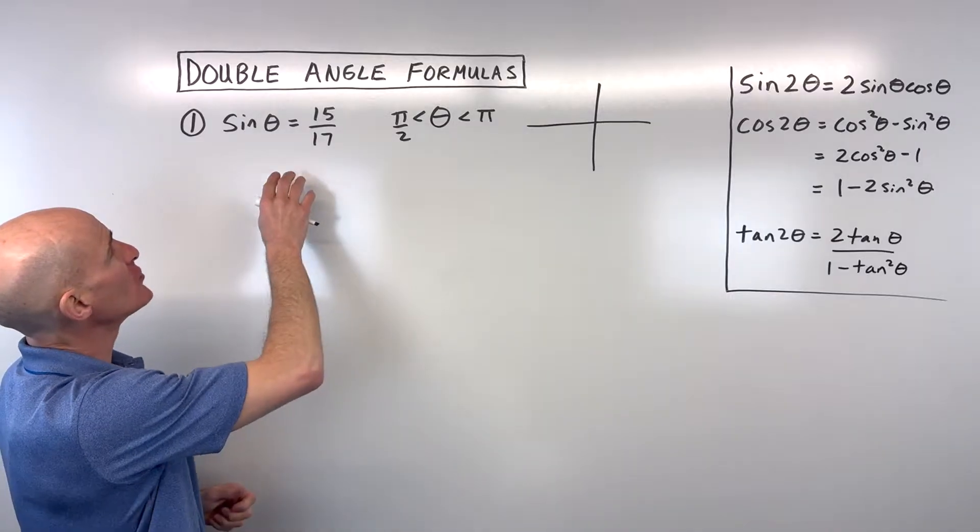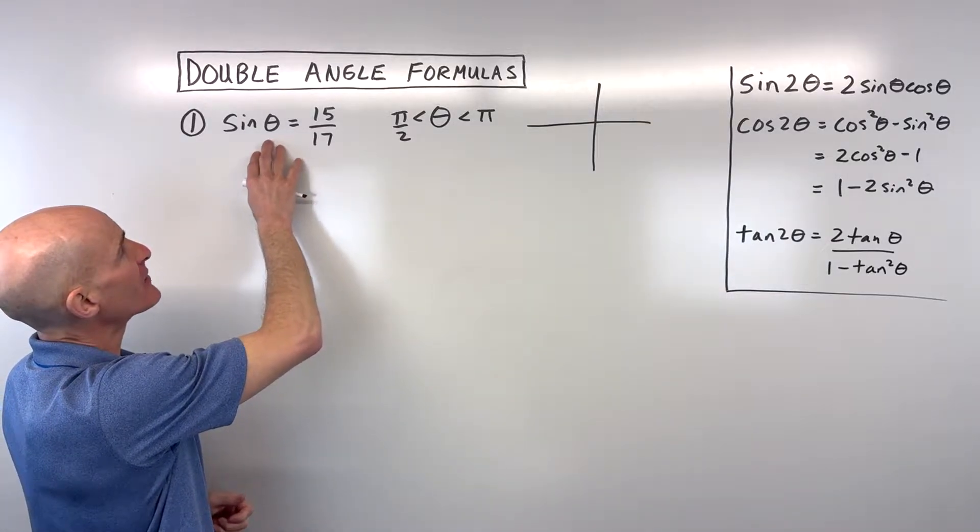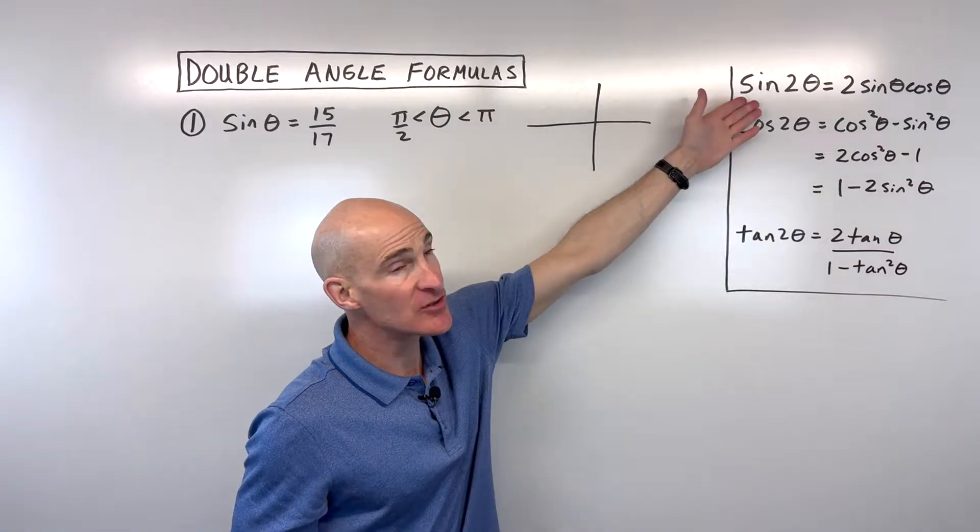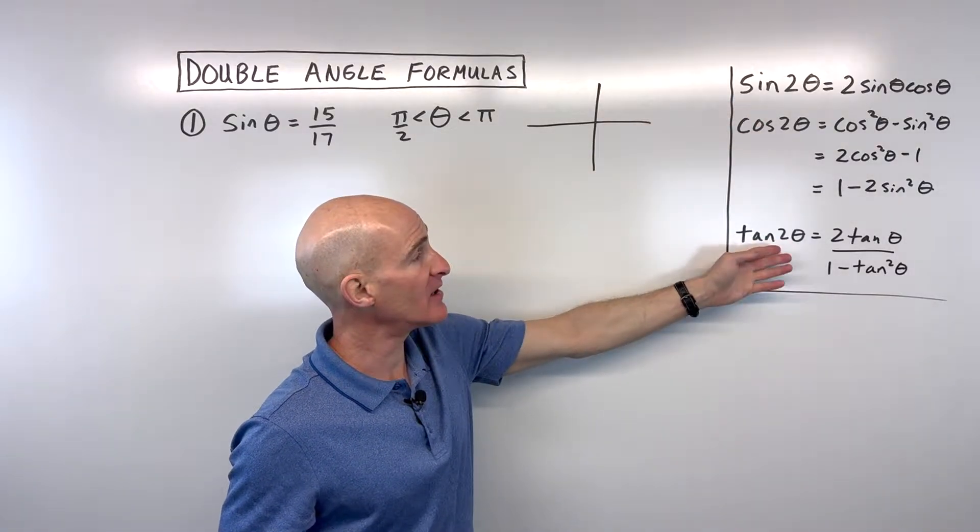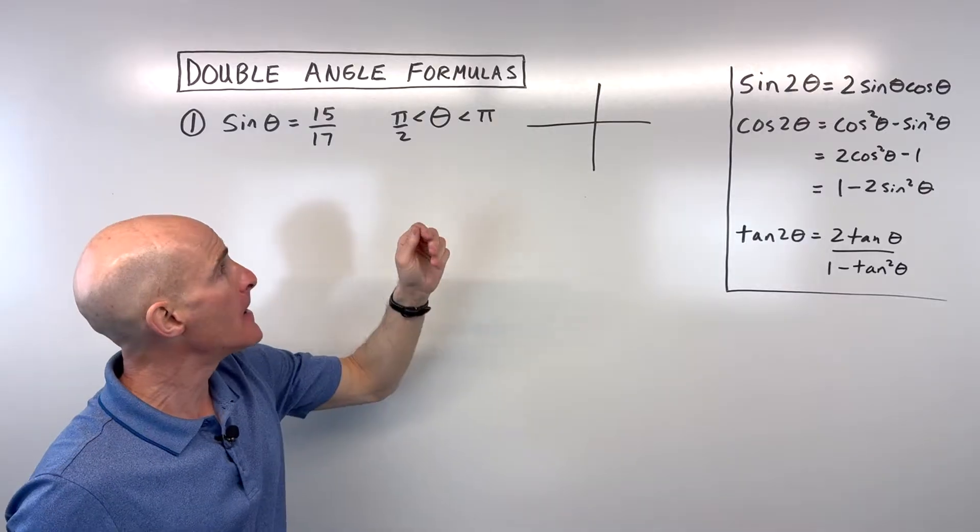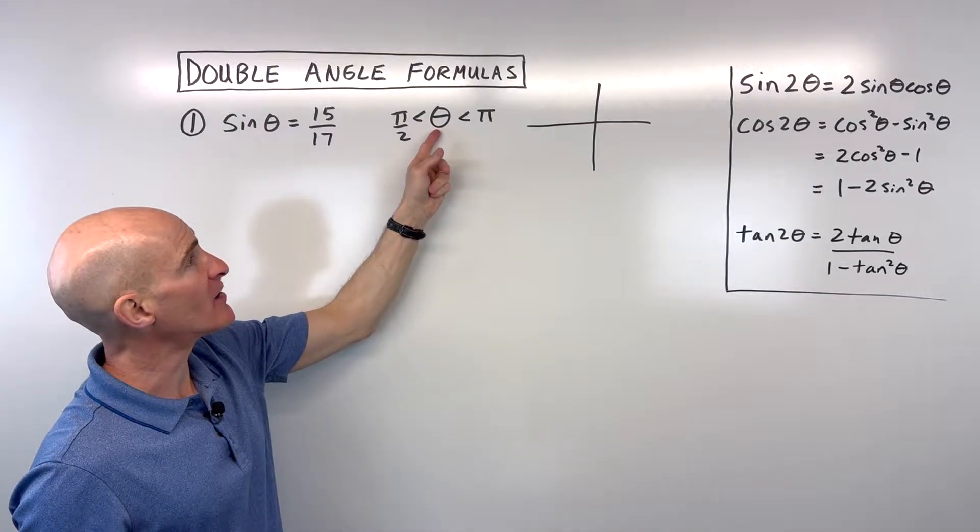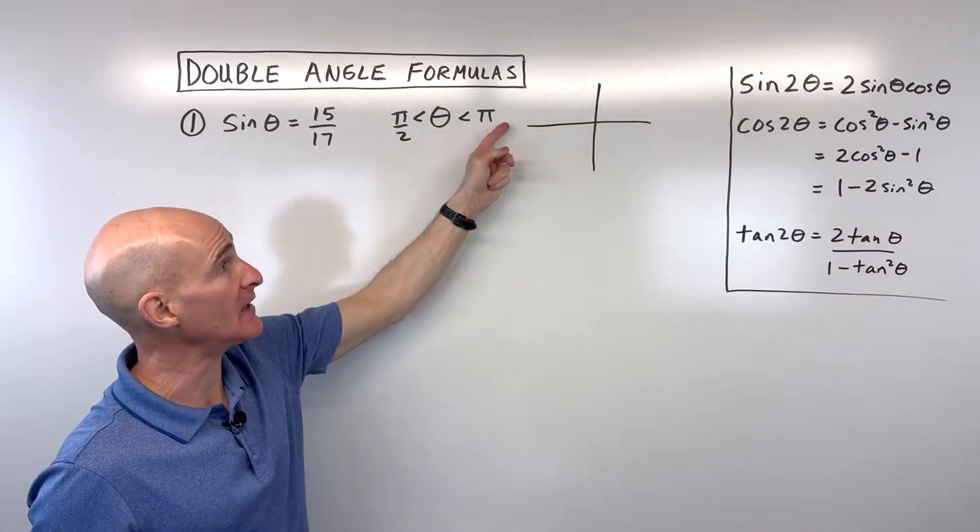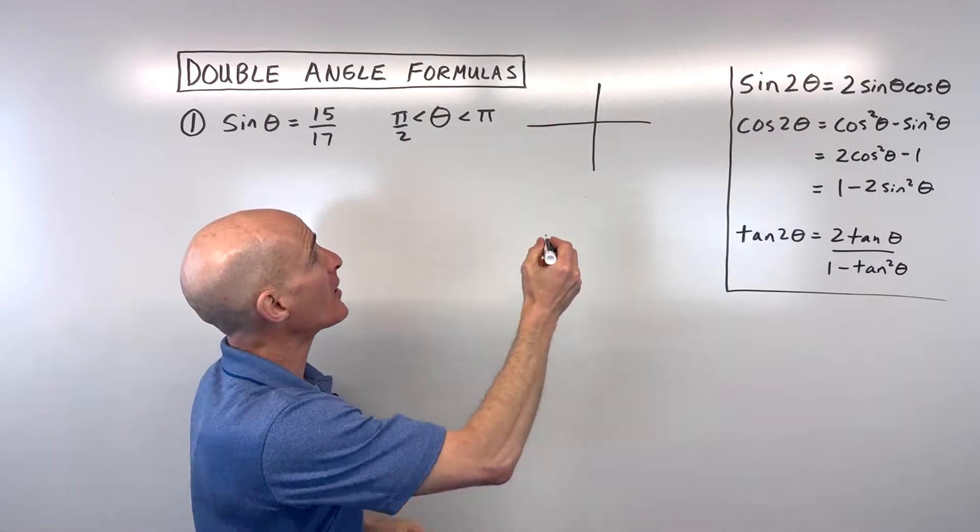The first thing we want to do is look at sin θ = 15/17, and we want to calculate sin 2θ, cos 2θ, and tan 2θ. Notice they're giving us this restriction that our angle θ is between π/2, which is 90, and π, which is 180, which puts us here in the second quadrant.